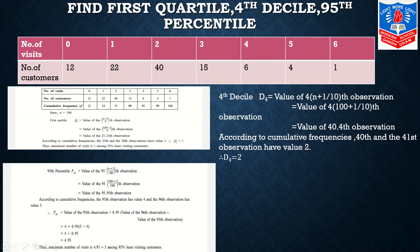Now we move on to the discrete frequency distribution. Find 1st quartile, 4th decile, and 95th percentile. Number of visits and number of customers are given to you. The first two columns are the part of question, then you have CFI calculation. You all know how to calculate.